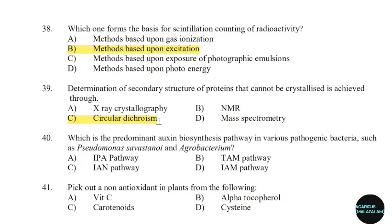40th question: Which is the predominant auxin biosynthesis pathway in various pathogenic bacteria such as Pseudomonas savastanoi and Agrobacterium? Correct answer: Option D — IAM pathway.